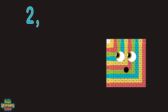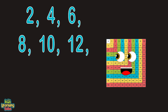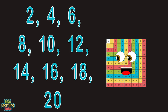Now sing with me. Two, four, six, eight, ten, twelve. You're doing great. Fourteen, sixteen, eighteen, twenty. When multiplying by one through ten, this is plenty.